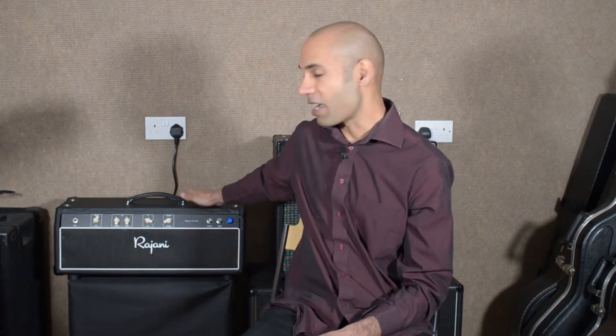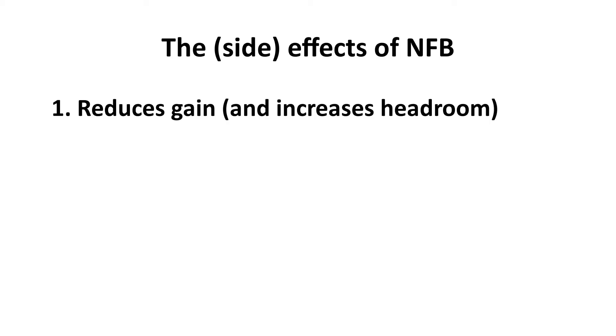Those numbers correspond to this amplifier here. Now we know what negative feedback is — let's see what the effects are so we can understand why you'd want to use it in a valve power amp. The primary effect of negative feedback is that it reduces gain. But there are other ways of reducing gain — you could just turn the volume down — so that's not really why we use negative feedback in a valve power amp.